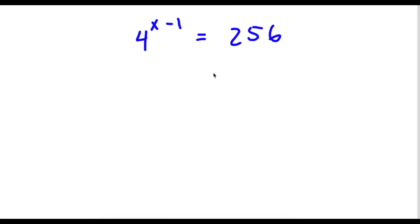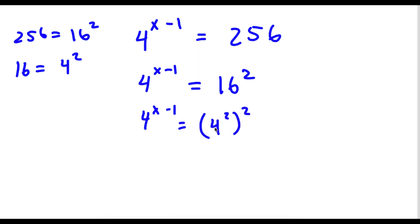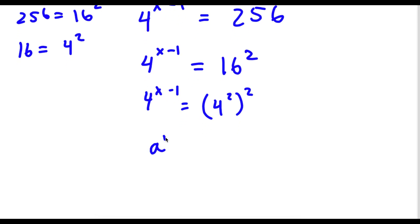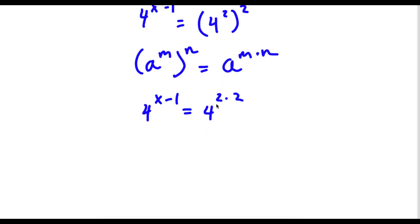So I have 4 to the power of x minus 1 is equal to 256. Now 256 is equal to 16 squared. So now I have 4 to the power of x minus 1 is equal to 16 squared. Now 16 is equal to 4 squared. So I have 4 to the power of x minus 1 is equal to 4 squared to the power of 2. Using the rule a to the power of m to the power of n equals a to the power of m times n, 4 squared to the power of 2 equals 4 to the power of 4. So now I have 4 to the power of x minus 1 is equal to 4 to the power of 4.